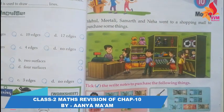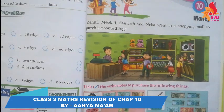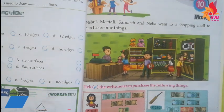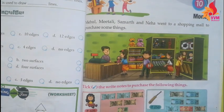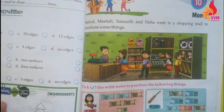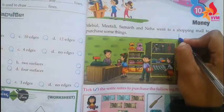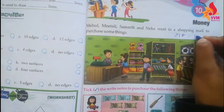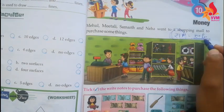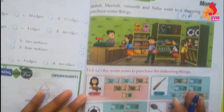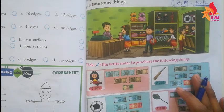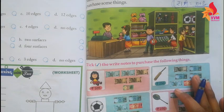Money kya hoti hai? Kisi bhi cheez ko kharidne ke badle mein jo hum exchange mein provide karte hain, use money kehte hain. Money kisi bhi place ki currency hoti hai. Jaise hamare India ki currency kya hai — Rupees ya Paise. Indian currency hai Rupees.